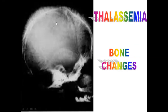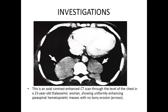The skull X-ray in beta thalassemia has a typical finding — it looks like the skull has spikes or 'hairs on end,' giving an appearance like ears on the bone. This is typical of thalassemia. Another investigation at the chest level shows uniformly enhancing paraspinal hematopoietic masses due to extramedullary hematopoiesis around the vertebrae.